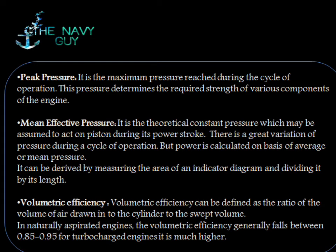Peak pressure is the maximum pressure reached during the cycle of operation. This pressure determines the required strength of various components of the engine. Mean effective pressure is the theoretical constant pressure which may be assumed to act on the piston during its power stroke. There is a great variation of pressure during a cycle of operation, but power is calculated on the basis of average or mean pressure. It can be derived by measuring the area of an indicator diagram and dividing it by its length.